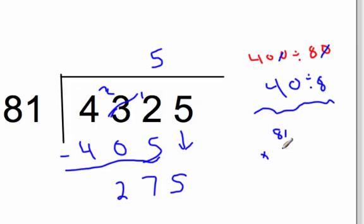We can try 81 times 3. And you don't have to do it like this. You could do it the way we did it the first time, just through estimating. 81 times 3, that's 3. 8 times 3, that's 24. And actually, this is going to work three times.